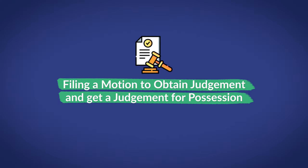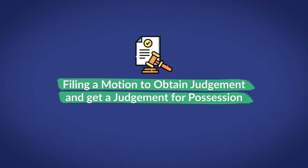Asking for possession: the landlord must file a motion to obtain judgment and get a judgment for possession. The landlord has to provide a strong argument backed up by solid evidence against the tenant. Should the tenant fail to show up to the hearing, the landlord wins by default. If the landlord does not win, they can still appeal within seven days post-judgment for reconsideration.